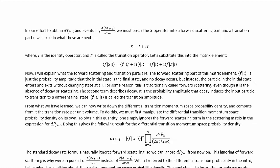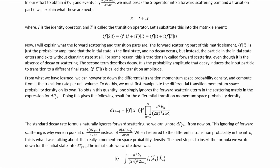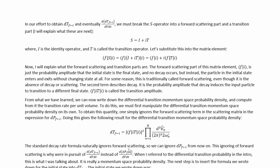The quantity from the T operator is called the transition amplitude. From this, we can write down the differential transition momentum space probability density. To obtain this quantity, one simply ignores the forward scattering term in the scattering matrix expression for the complete probability density, which gets us to the transition-only expression. The standard decay rate formula naturally ignores forward scattering. This ignoring of forward scattering is why we pursue the transition quantity instead of the forward-scattering-inclusive version.